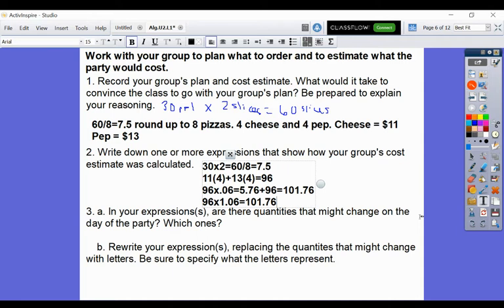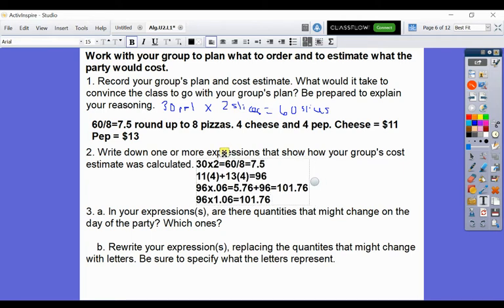And again, your conversations that you had with your group could be different with mine because I chose my numbers based on how I wanted. $11 for cheese, $13 for pepperoni, two slices per person. So yours might be different, but this is what I'm looking for, these types of equations.